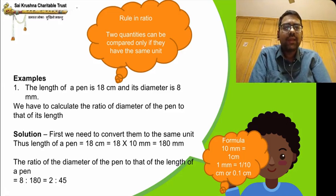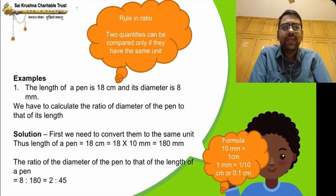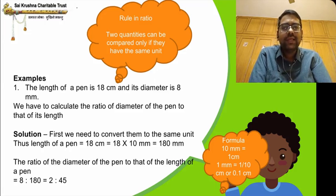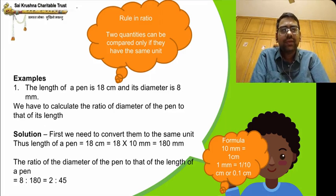The length of a pen is 18 centimeters and its diameter is 8 millimeters. The units are different — centimeter and millimeter. We have to calculate the ratio of diameter of pen to that of its length. We'll convert centimeters to millimeters. 10 millimeters equals 1 centimeter, so 18 centimeters equals 180 millimeters. The ratio of diameter to length is 8 is to 180, which simplifies to 2 is to 45.